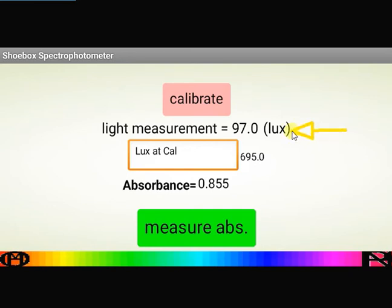This is a real-time light measurement, so it's constantly changing if you move the phone around. But it's quite useful to have this real-time measurement because it's useful in getting your phone in the right position when you're making your shoebox spectrophotometer.